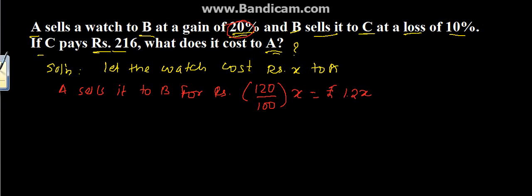Now the second step is: B sells it to C at a loss of 10%. So B sells it to C for rupees 90 upon 100.